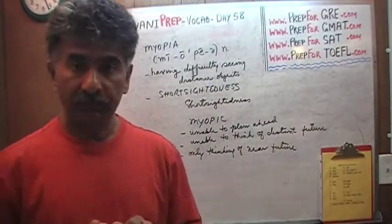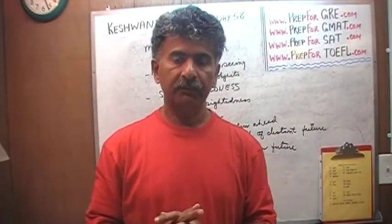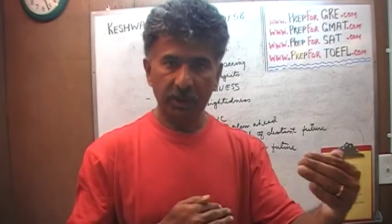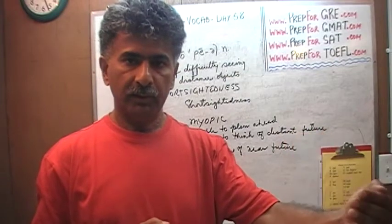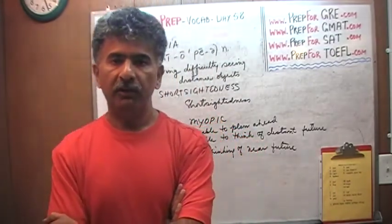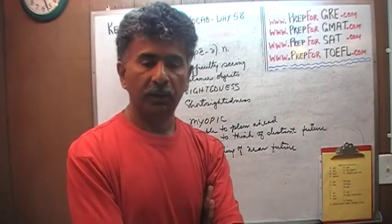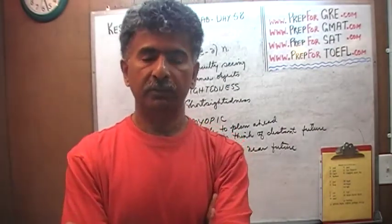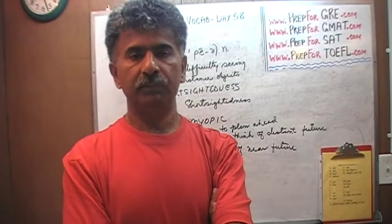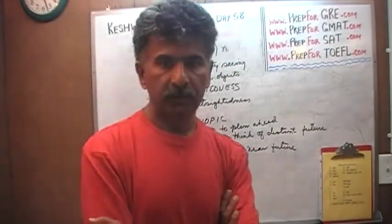Americans and European firms are sometimes accused of being myopic in their outlook because they worry only about the dividends they're going to declare at the end of the next quarter. They have a very myopic view — as opposed to Japanese firms, which have a reputation for planning far ahead, thinking five, ten, twenty, or thirty years into the future. They do not have a myopic outlook.